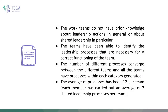As a conclusion, the work teams don't have prior knowledge about leadership actions or about shared leadership. Some actions are programmed before starting the teamwork and others arise from needs. However, the teams have been able to identify the leadership processes necessary for a correct functioning of the team, achieving planned objectives, cooperating online, and adapting to the training and academic evaluation process. The number of different processes converges between the different teams, and all teams have processes within each category generated, which confirms the hypothesis proposed. The average number of processes has been 12 per team, meaning each team carried out an average of two shared leadership processes per category.